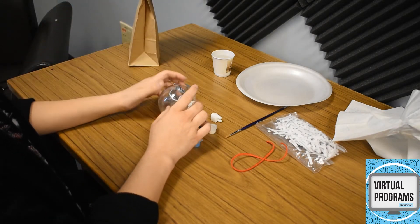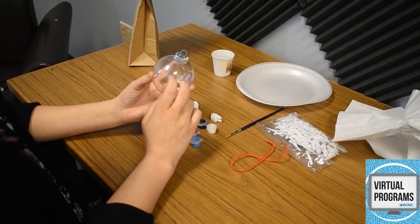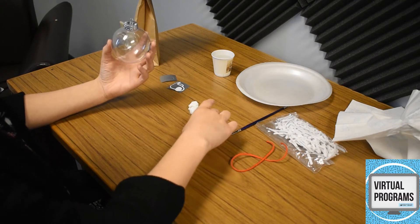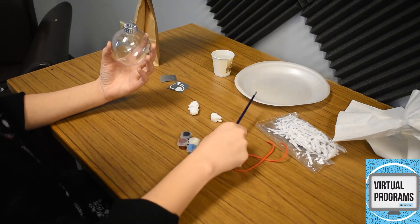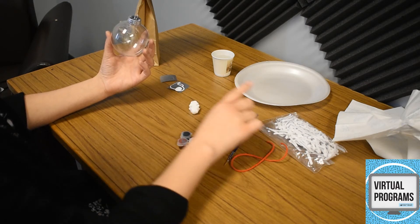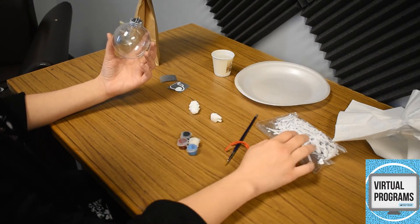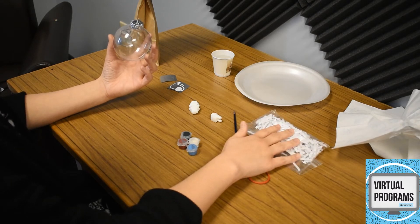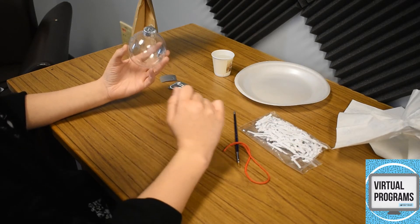In this bag you will have one clear ornament, four paints, a paintbrush, three figurines, three stencils, one string, and a little bag of fake snow that we can stuff inside of our ornament.